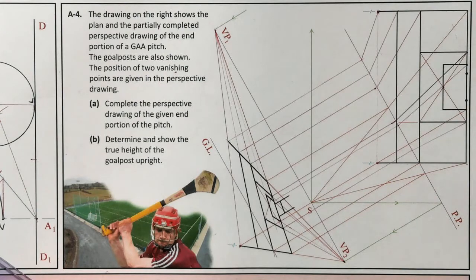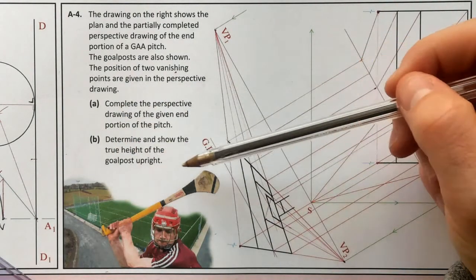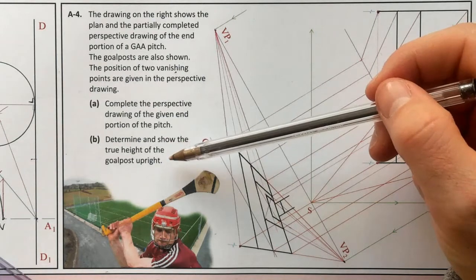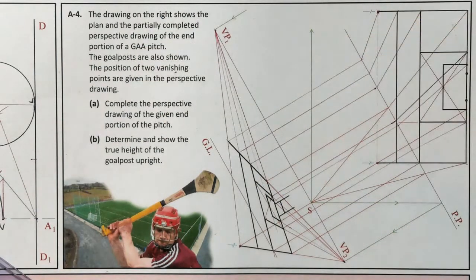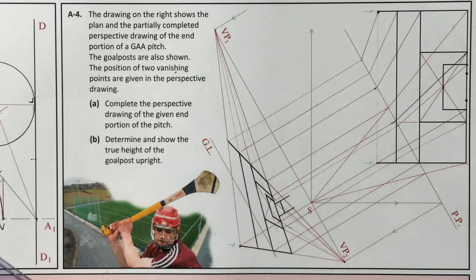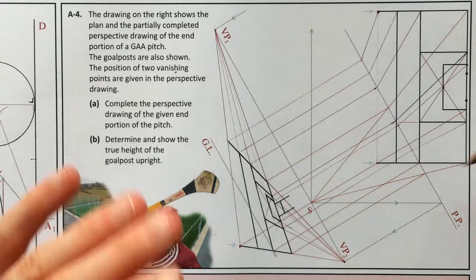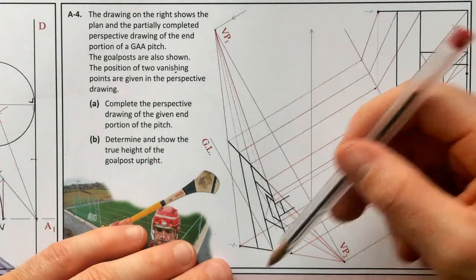That's Part A done. Part B says: determine and show the true height of the goal post upright. We're showing height lines. Generally you'd be given a height from an elevation, then project down parallel to one of the vanishing points to your ground line and work the height up. Here we don't have the elevation but we do have the height of the goal post, so we can work it backwards.